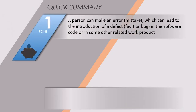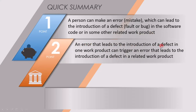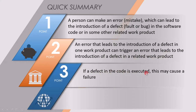Let's quickly summarize the points. A person can make an error or mistake, which can lead to the introduction of a defect — which is a fault or a bug — in the software code or in some other related work product. An error that leads to the introduction of a defect in one work product can trigger an error that leads to the introduction of a defect in a related work product. If a defect in the code is executed, this may cause a failure.